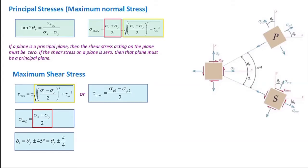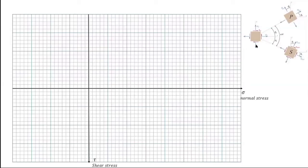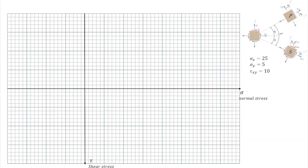The idea of Mohr's circle is to use a graphical method to calculate the transformed stress at any point, and also calculate the principal stresses and maximum shear stresses using a circle. Let's consider an example to see how to construct a Mohr's circle. Consider an arbitrary stress element with stresses sigma x, sigma y, and tau xy. We want to determine the magnitude of those stresses and the angle of rotation. I'll assume sigma x is 25, sigma y is 5, and tau xy is 10.